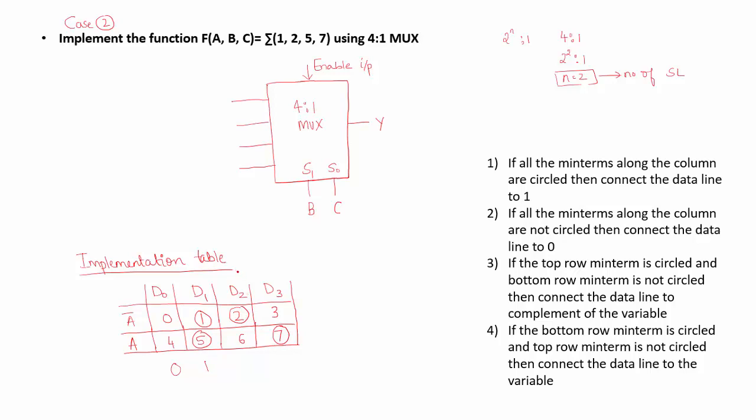Along D2 column, top row is circled and bottom row is not circled. So I must connect D2 to complement of the variable, that is A-bar. And along D3 column, top row is not circled, bottom row is circled. So as per rule 4, I will have to connect this to the variable, that is A.